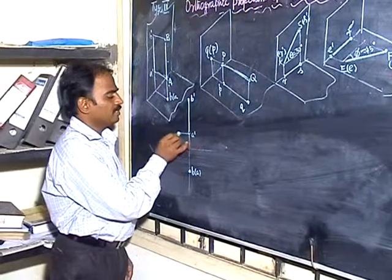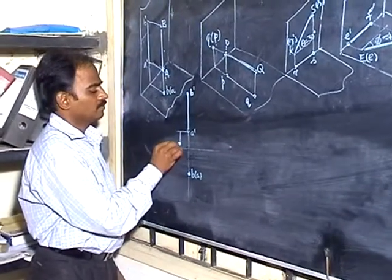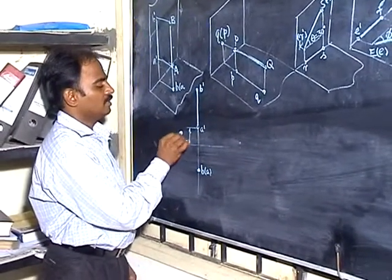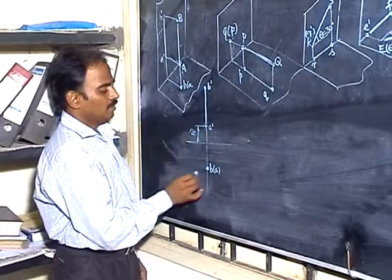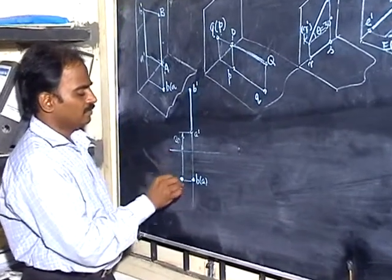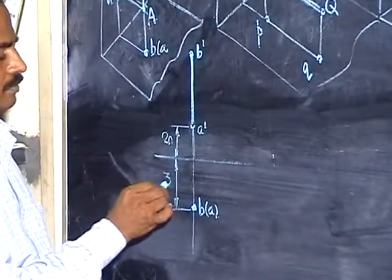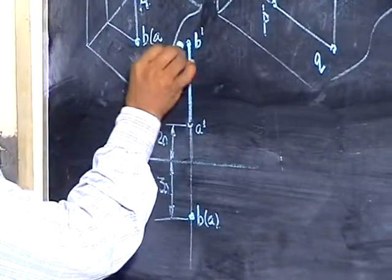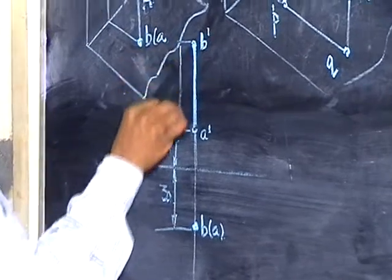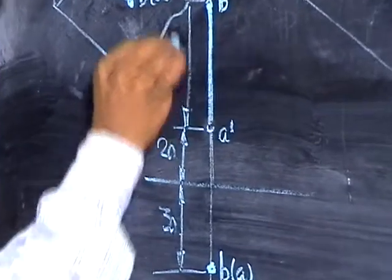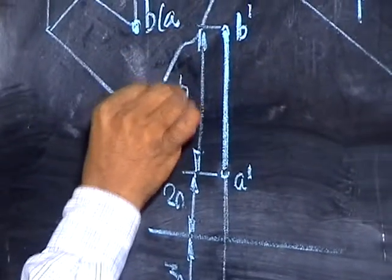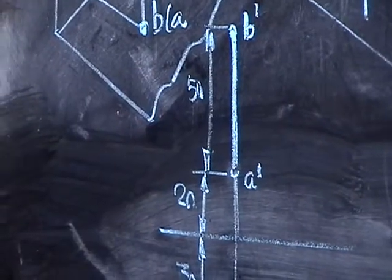So you have to specify this distance. Let's say this distance is 20 mm. Then you have to specify this distance, 30 mm in front of BP. You have to specify the length of the straight line. Here in this case, take the length of the straight line as 50 mm. Let us go to the next case, Type 5.